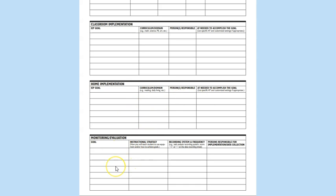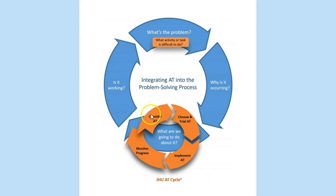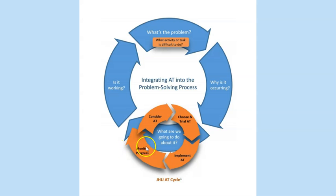Now we're going to spend some time looking at monitoring and evaluation. We've considered text-to-speech, feature matched, chosen, and trialed assistive technology. We've been implementing with the help of our implementation plan. Now we're monitoring progress and collecting data on whether this trial is effective. Here are some tools you might consider when undertaking that investigation.